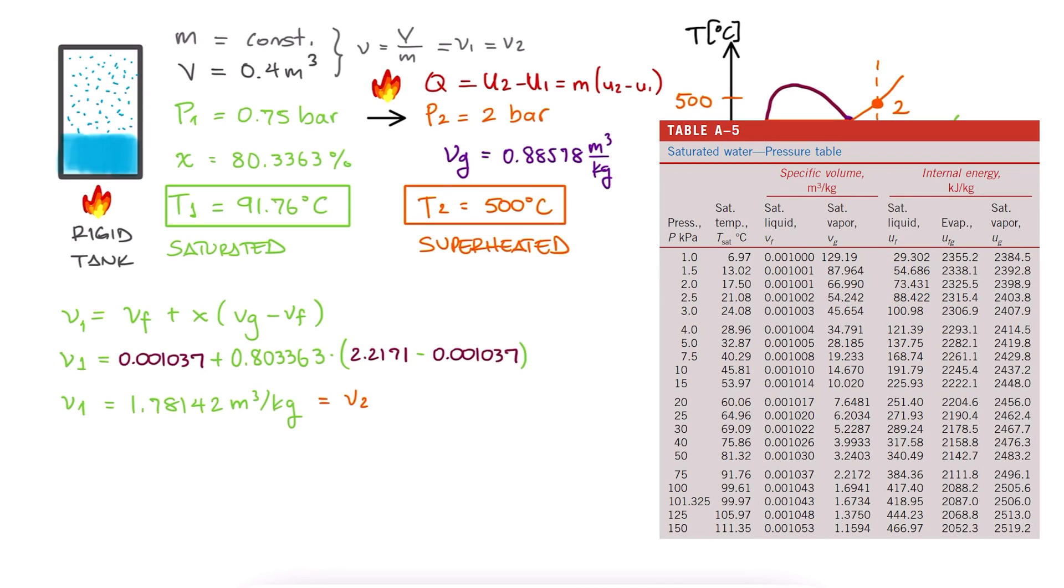We still use UF and UG for 0.75 bar to find the specific internal energy at state 1, with the help of the same quality expression, only this time using the specific internal energy instead of the specific volume. We write down UF and UG and calculate U1.